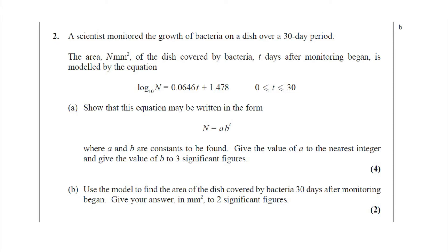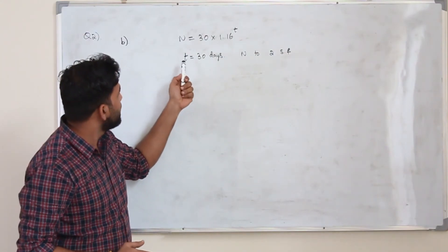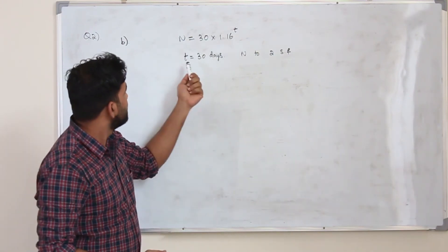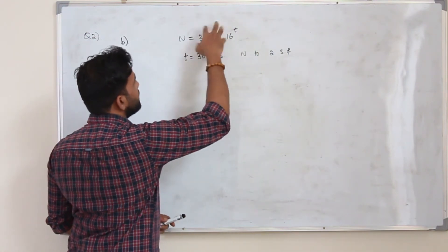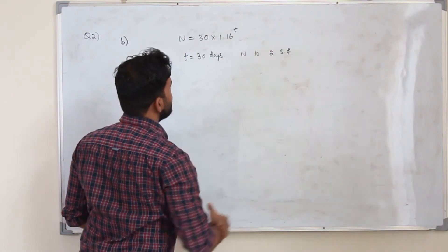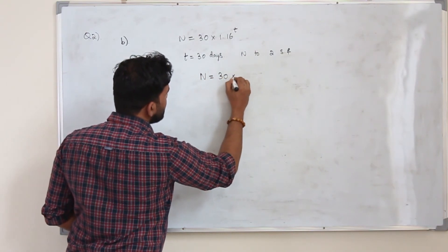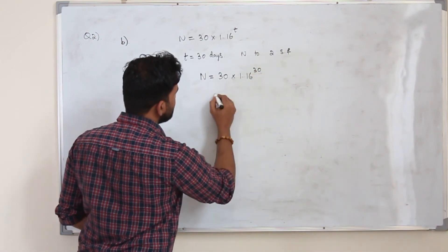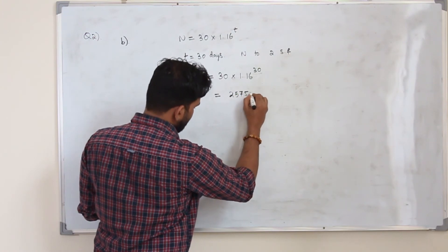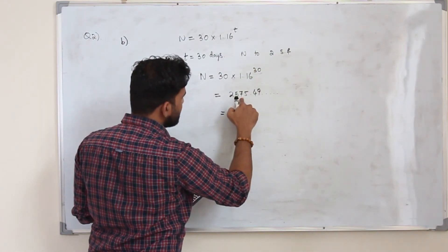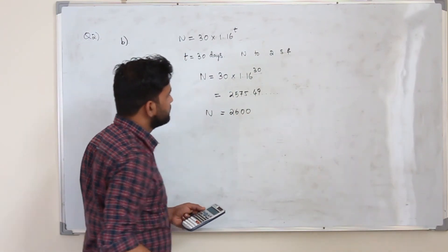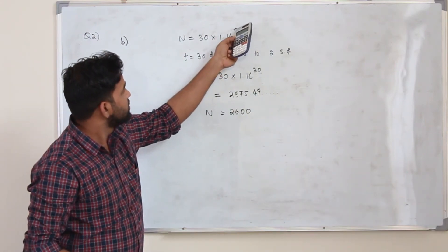Part B: use the model to find the area of the dish covered by the bacteria 30 days after monitoring began, giving your answer to two significant figures. This question carries 2 marks. They want you to find the value of n when t = 30. Just substitute t = 30: n = 30 × 1.16^30. The answer is approximately 2575.49, which rounds to 2600 to two significant figures.